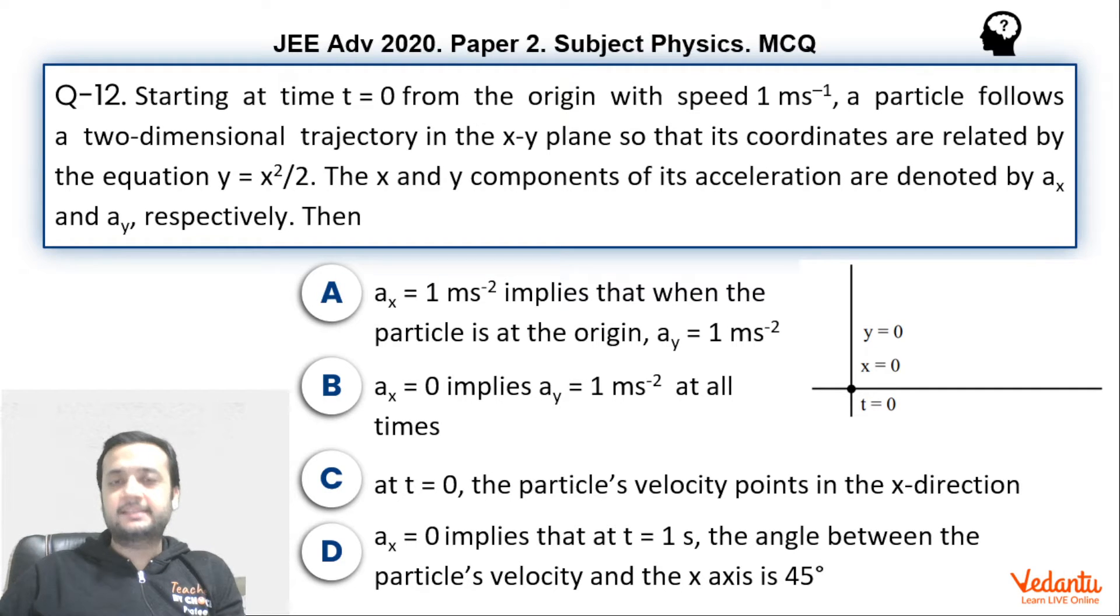Hi dear students, let's see this question that was asked in JEE Advance paper 2 2020 physics. The question is very simple based on multiple choice correct marking scheme, but because of one particular option that is option A, there is slight ambiguity in this and that too not because of physics but because of English.